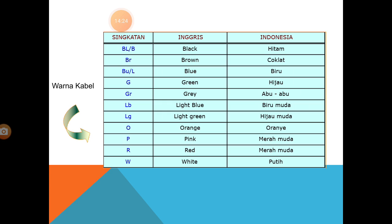Singkatan warna kabel: BL atau B (Black) — hitam; BR (Brown) — coklat; BU (Blue) — biru; G (Green) — hijau; GR (Grey) — abu-abu; LB (Light Blue) — biru muda; LG (Light Green) — hijau muda; O (Orange) — oren; P (Pink) — merah muda; R (Red) — merah; W (White) — putih.